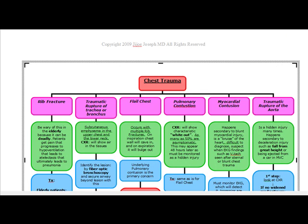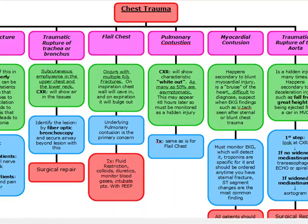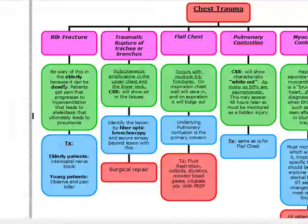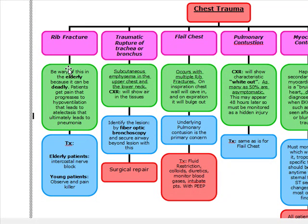Next topic is chest trauma and we're going to start off with rib fractures. For test purposes, we got to remember the elderly patient that gets rib fractures. What kind of elderly patient can be predisposed to rib fractures? Osteoporotic patients. But other patients that can get rib fractures are elite athletes. It can happen secondary to cancer or secondary to infection.